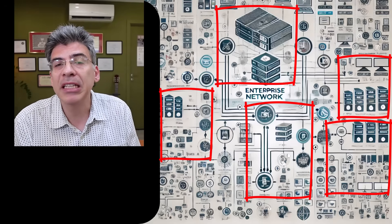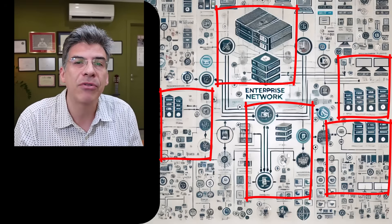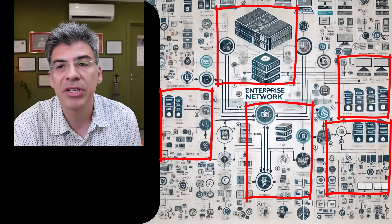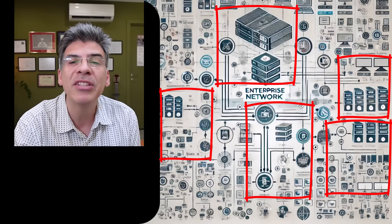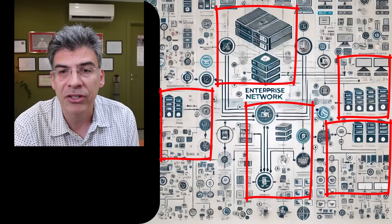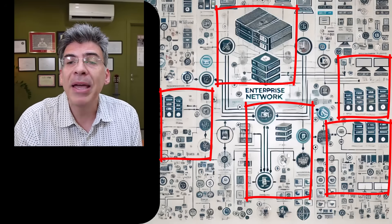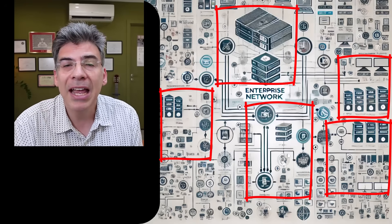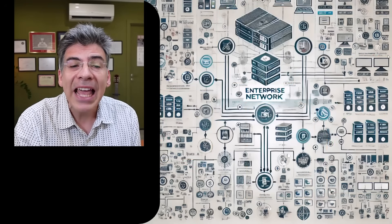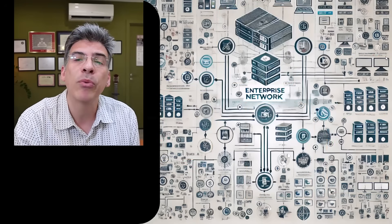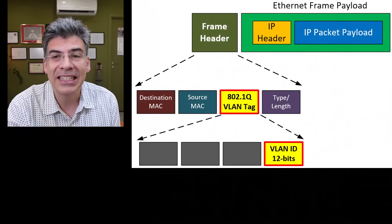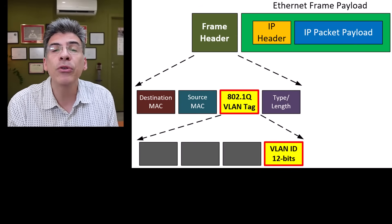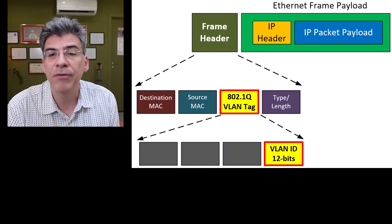Each VLAN will typically be assigned its own IP address subnet. These subdivisions are useful in enterprise networks because they're part of the fundamental network design and architecture. You can subdivide a network based on function, department, physical location, and many other factors. VLANs are identified within a network using their VLAN ID, which is defined as part of the IEEE 802.1Q standard for Ethernet.